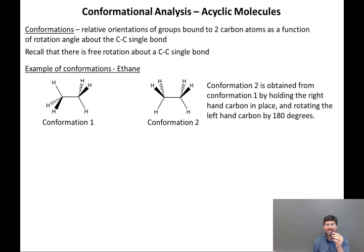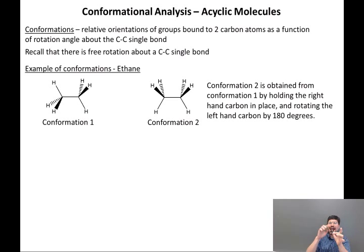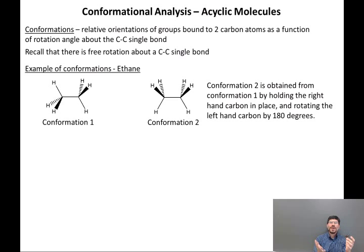As an example, we're going to use a simple molecule, namely ethane. Two carbons, and bound to each of the two carbons are three hydrogens, for a total of six hydrogens.